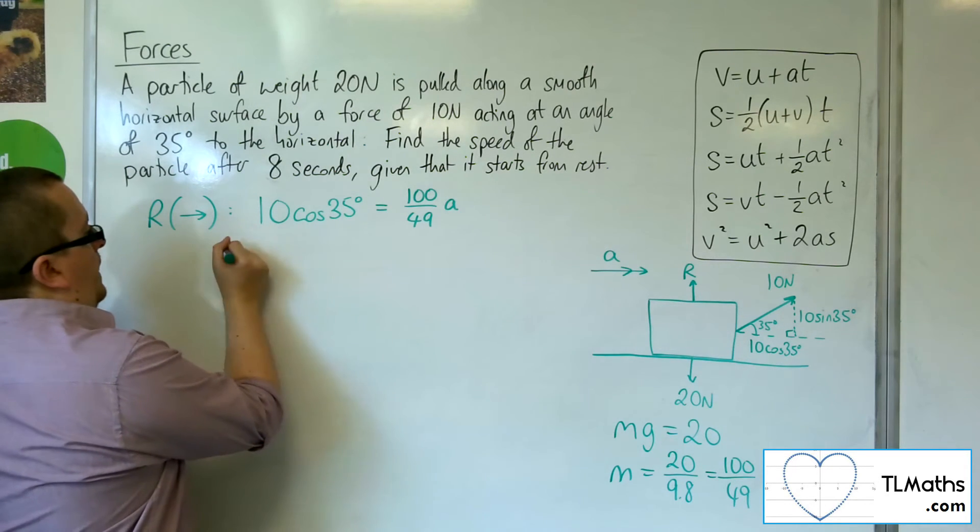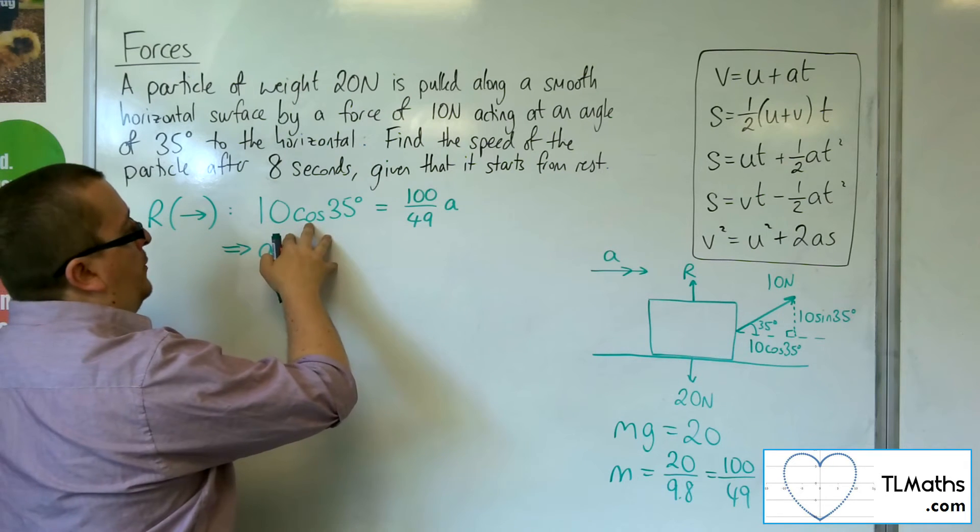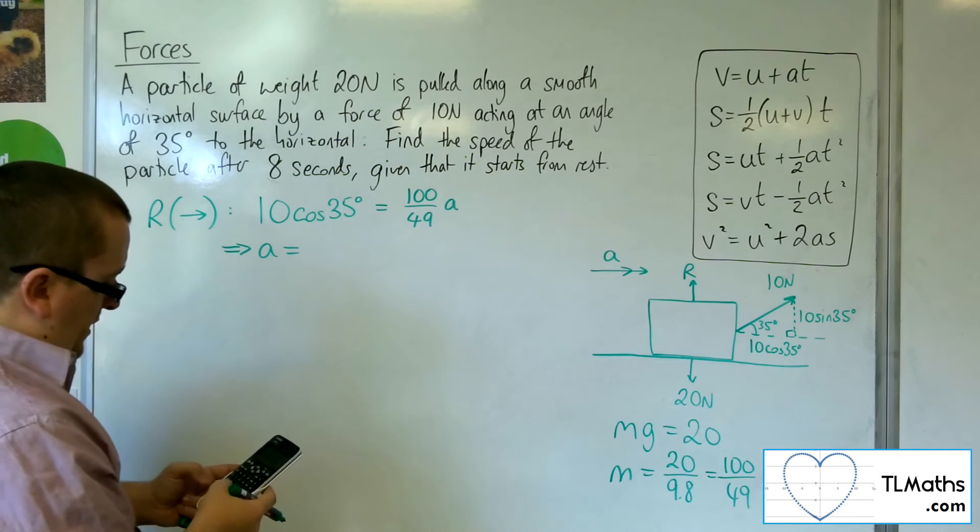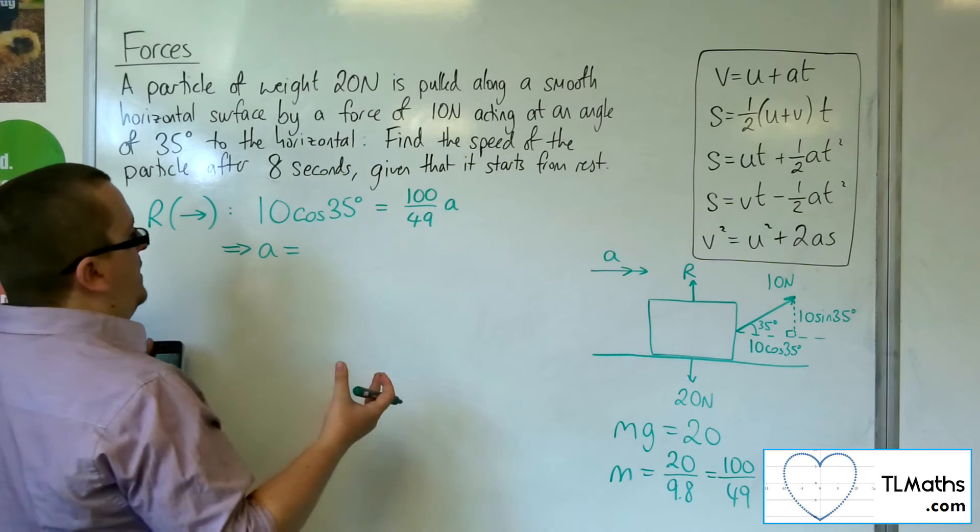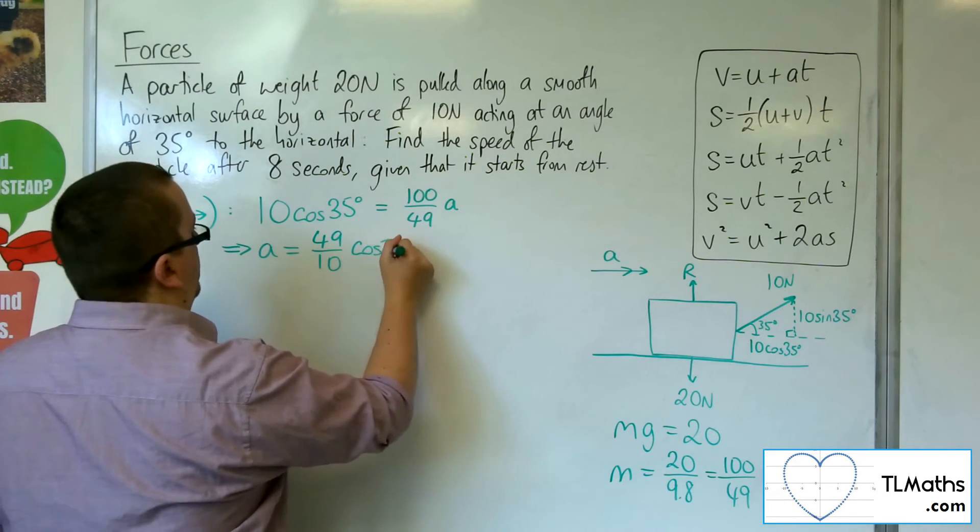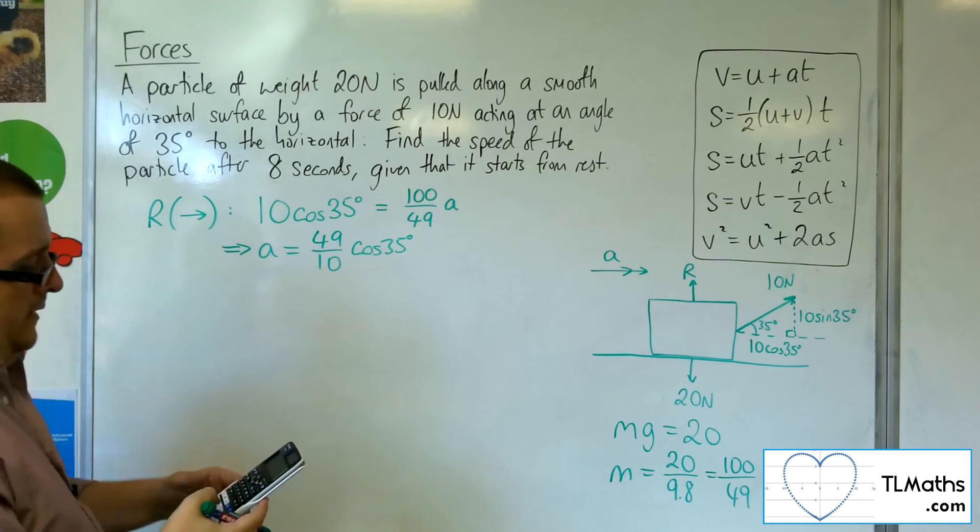So, that's mass times acceleration. So, the acceleration will be multiplying both sides by 49 over 100. So, 49 over 100 times by 10. So, we get 49 tenths times the cosine 35. So, that's the exact value of it.